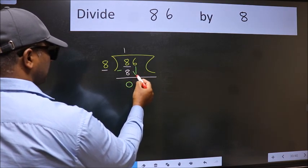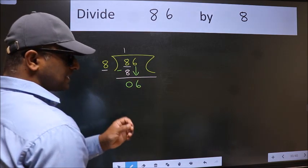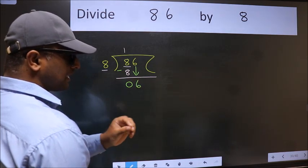After this, bring down the beside number. So 6 down. After this step, the mistake happens. And the mistake is this.